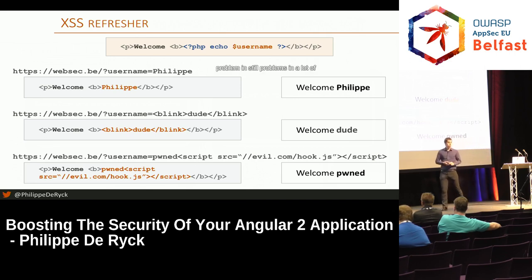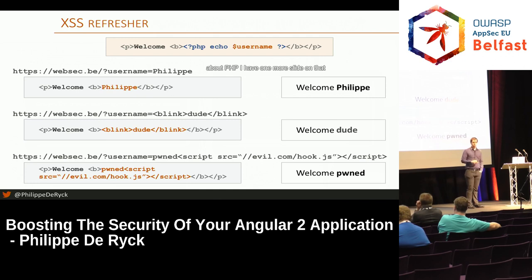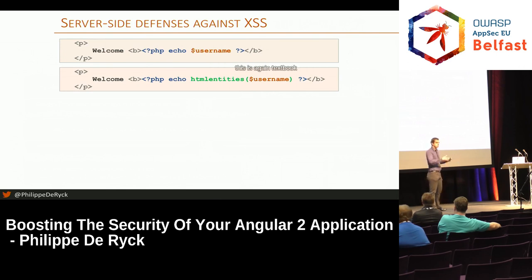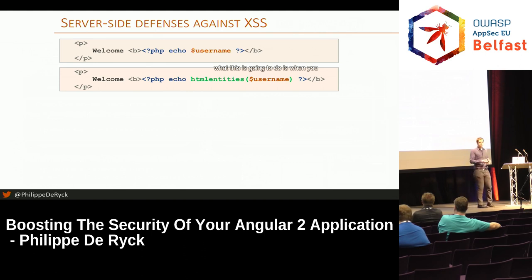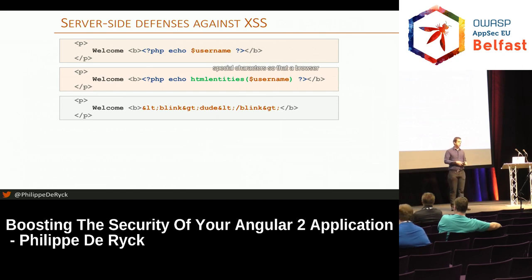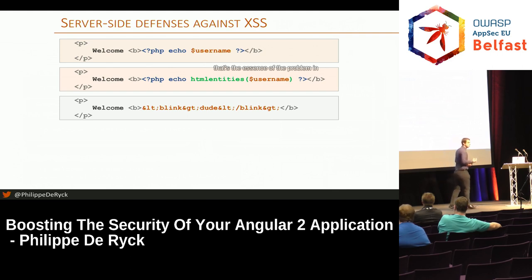This is still a big problem in a lot of applications. How do you defend against this? You need to encode the data when you put it into the page. This is the textbook defense against cross-site scripting. The server is going to encode special characters so the browser does not get confused about the difference between data and code, because that's the essence of the problem in traditional cross-site scripting.